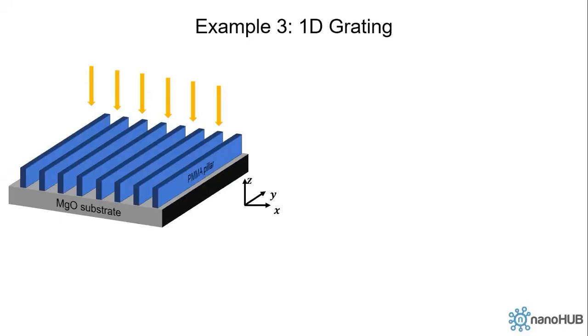PMMA is a kind of polymer. It's sometimes called organic glass, and magnesium oxide is a substrate that is oftentimes used as the material substrate when we deposit multi-layer structures.